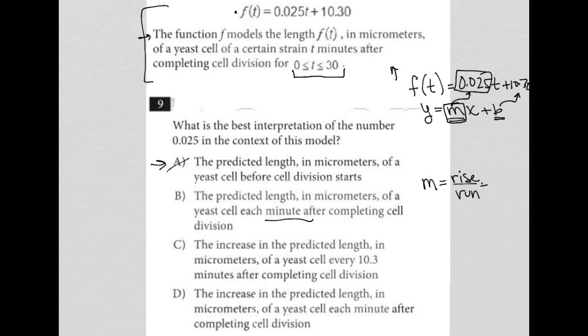So for us, this would be change in length. This triangle means change. So change in length over our run here would be minutes. So like each minute, how much does it change in length? But this is saying the predicted length, which is a very stagnant thing. So that's not correct.